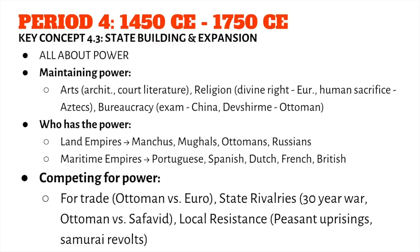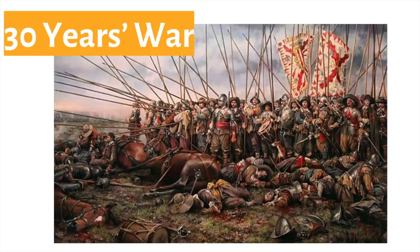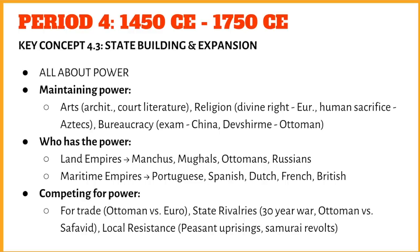Competing for power — it's not like all those people just walked in and had it. They competed, sometimes over trade routes like the Ottomans and European powers. In some cases there are state rivalries that existed for a while, like the Thirty Years' War or Ottomans versus Safavids. In other cases you see local resistance — just because a group is in power doesn't mean everyone's happy about it. People revolt: samurai revolts, peasant uprisings happened across the world. The Thirty Years' War looks like something out of Game of Thrones — people competing over deeply seated rivalries based on religion, culture, and history.